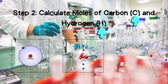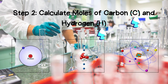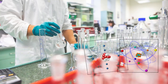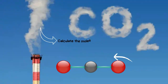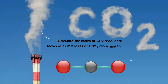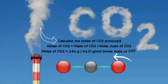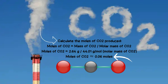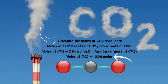Step 2: Calculate moles of carbon and hydrogen. Calculate the moles of carbon dioxide CO₂ produced. Moles of CO₂ equals mass of CO₂ divided by molar mass of CO₂. Moles of CO₂ equals 2.64 grams divided by 44.01 grams per mole — the molar mass of CO₂. Moles of CO₂ equals 0.06 moles.